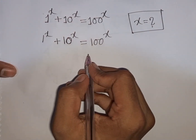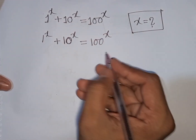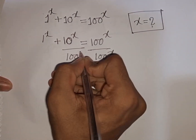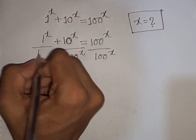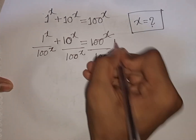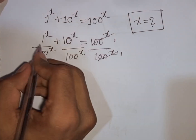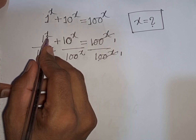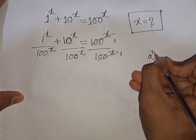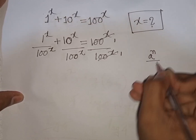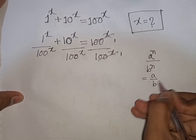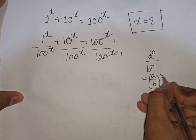So now we divide both sides by 100 power x. Now we see x is the same power but with different bases. According to the exponential rule, a power n over b power n is equal to a over b, then bracket to the common power n.